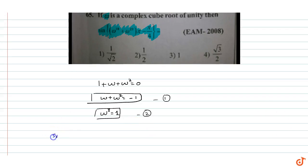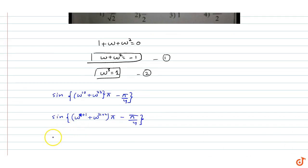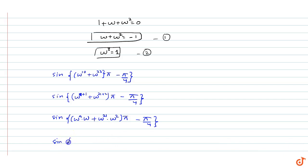Now, we have to find sine of (omega to the power 10 plus omega to the power 23) into pi minus pi by 4. We rewrite omega to the power 10 as omega to the power 9 plus 1, and omega to the power 23 as omega to the power 21 plus 2. So this becomes sin of omega to the power 9 into omega plus omega to the power 21 into omega squared, into pi minus pi by 4. We can write this as sin of (omega cubed) cubed into omega plus (omega cubed) to the power 7 into omega squared, into pi minus pi by 4.